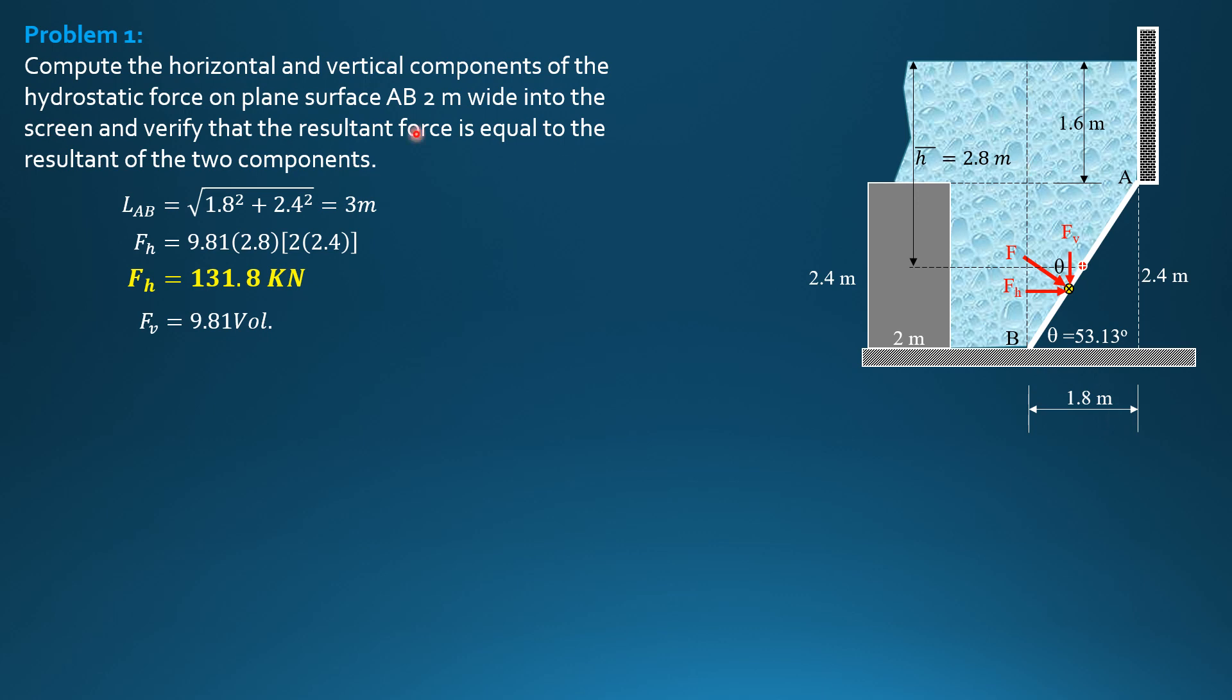So it is equal to 9.81 times, quantity 0.5 of 4 plus 1.6, times 1.8, and perpendicular to the board 2. FV therefore is equal to 98.88 kilonewtons.